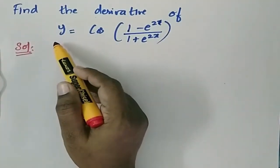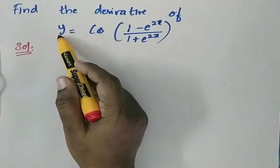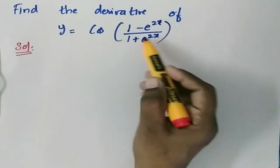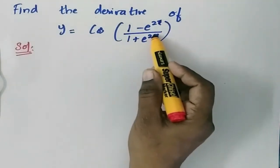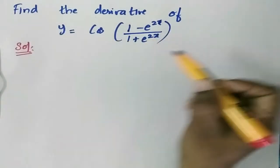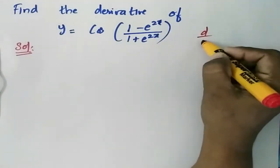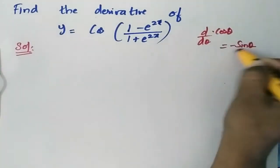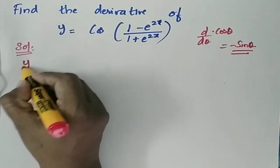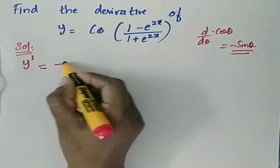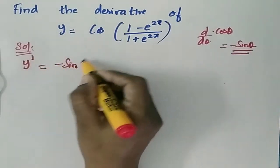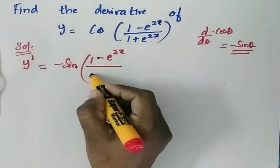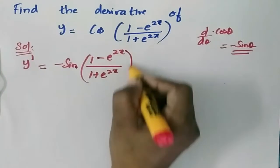Find the derivative of y = cos((1 - e^(2x)) / (1 + e^(2x))). The differentiation of cos(θ) is equal to -sin(θ). So, y' = -sin((1 - e^(2x)) / (1 + e^(2x))).